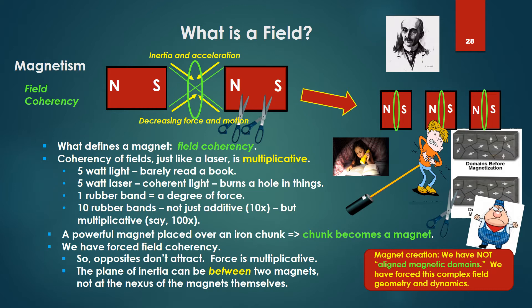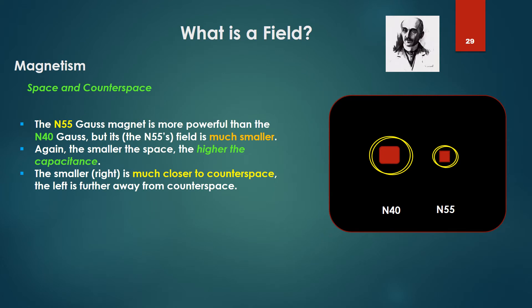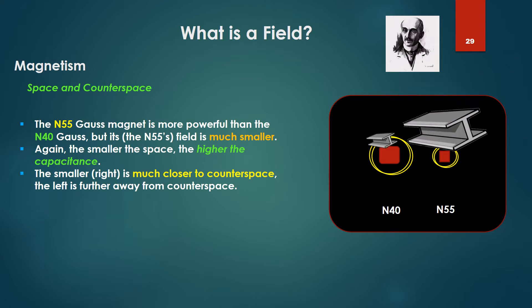So opposites don't attract. Force is multiplicative, and the plane of inertia can be between two magnets, not at the nexus of the magnets themselves. If we take two different size magnets — the N55 Gauss magnet is more powerful than the N40 Gauss, and yet the N55's field is much smaller. The N40, for the same distance, will attract a certain size of iron bar; the N55 will attract a much bigger bar at the same distance. The little N55 is much more powerful. Again, the smaller the space, the higher the capacitance. The smaller N55 is much closer to counter space; the N40 is further away from counter space, more spatial, larger space.